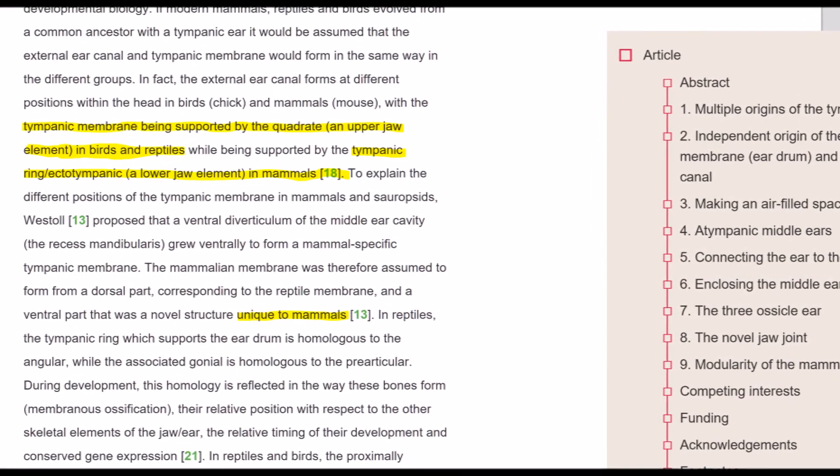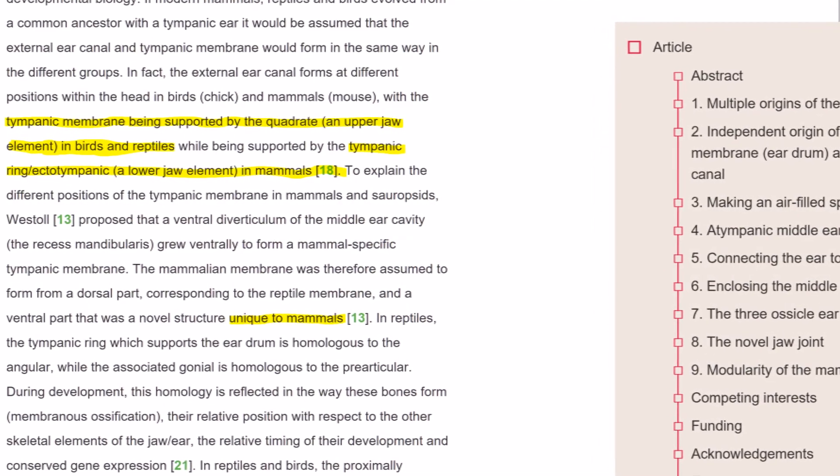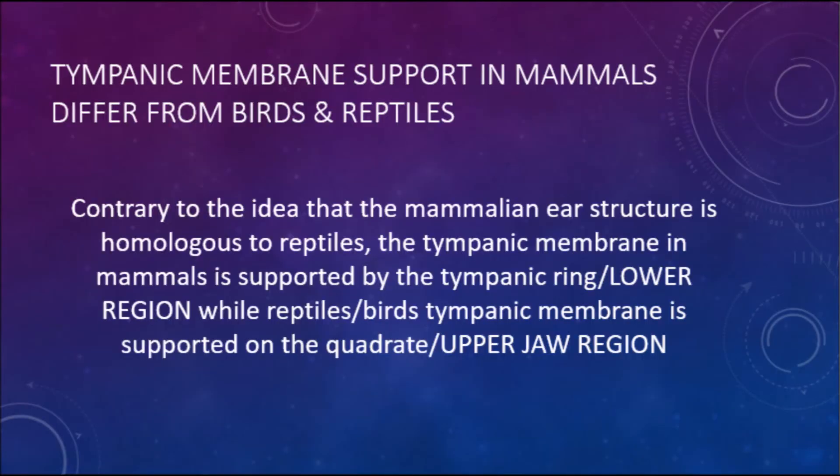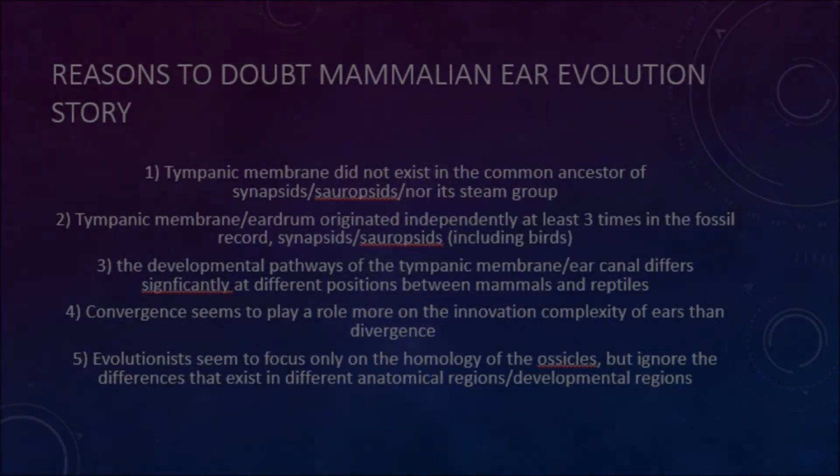Another interesting part that makes the distinction more profound is the positioning of the tympanic membrane between mammals and non-mammals. In birds and reptiles, the tympanic membrane is found to be supported by the quadrate, that is the upper jaw region, while in mammals, it is supported on the tympanic region, that is the lower jaw region.